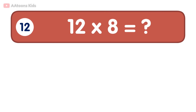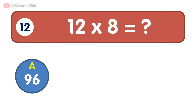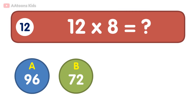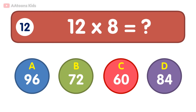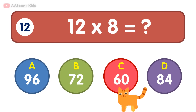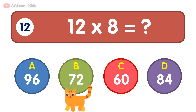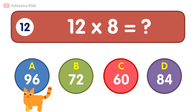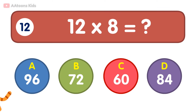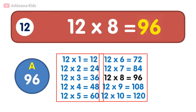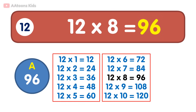12 times 8 is equal to 96. 12 times 8 is 96.